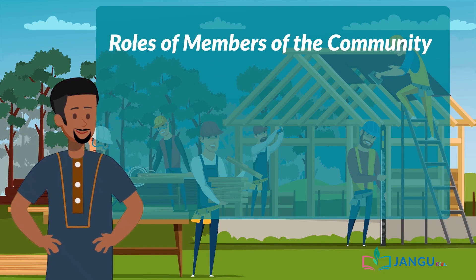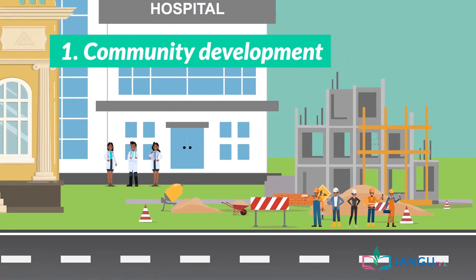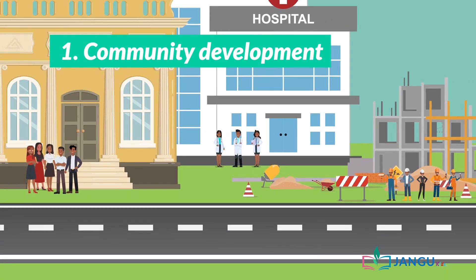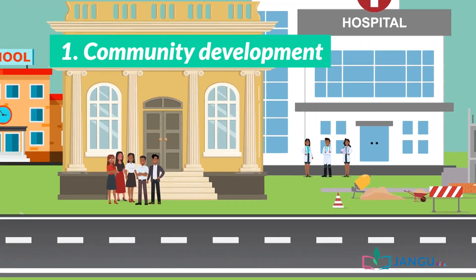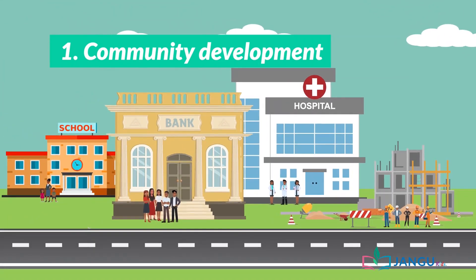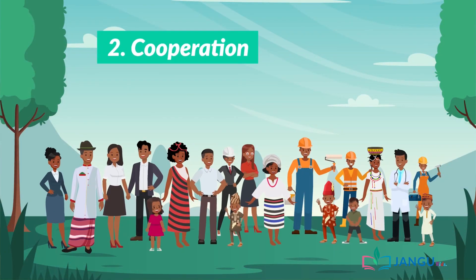Every member of the community has certain roles he or she has to play. Let's list some roles of community members. Number one: community development — members of the community must engage in development activities such as building and maintenance of community amenities such as drainages, roads, schools, health centers, markets, etc.